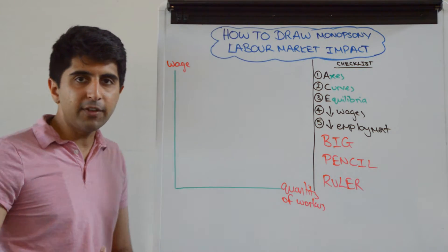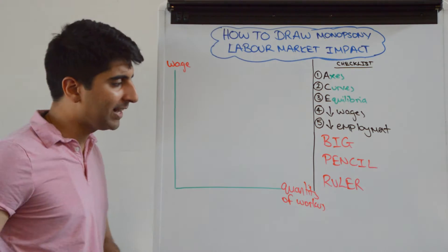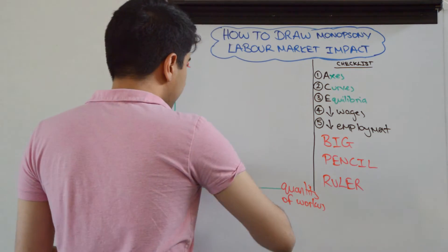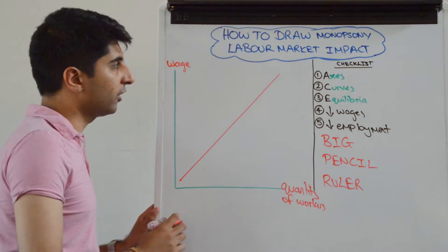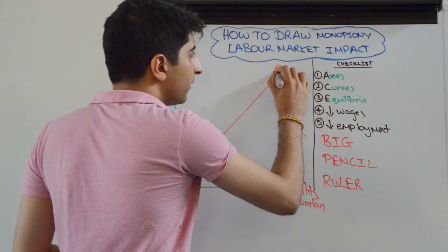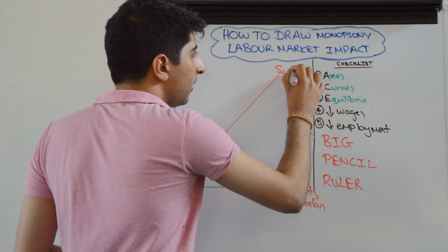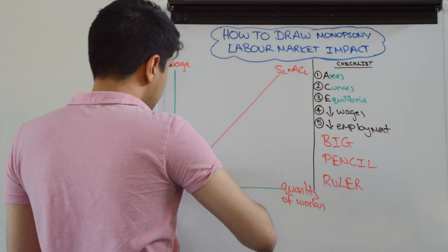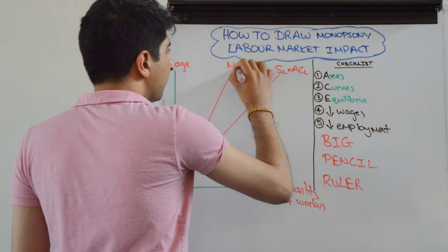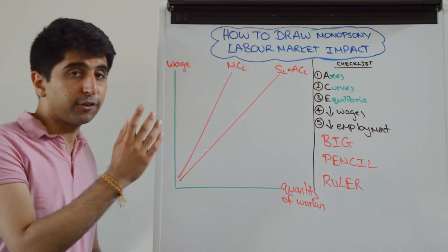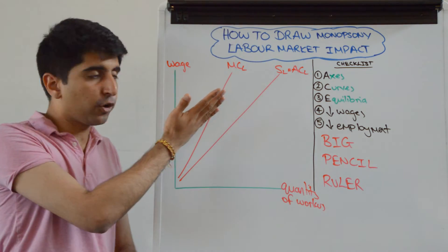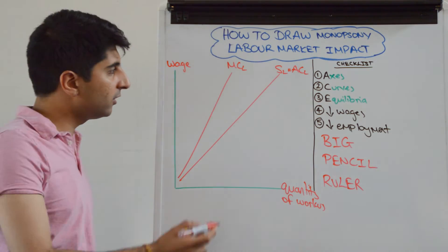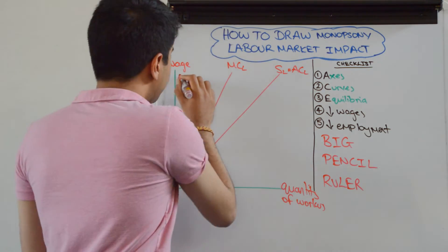As we are used to, the monopsonist is a wage maker — the sole buyer of workers in a given industry — so that means it has upward sloping average cost curves and marginal cost curves. We need to label the supply of labor, which is equal to the average cost of labor, and then the monopsonist also has a marginal cost of labor that's greater than average cost but twice as steep, still upward sloping. Label that as such.